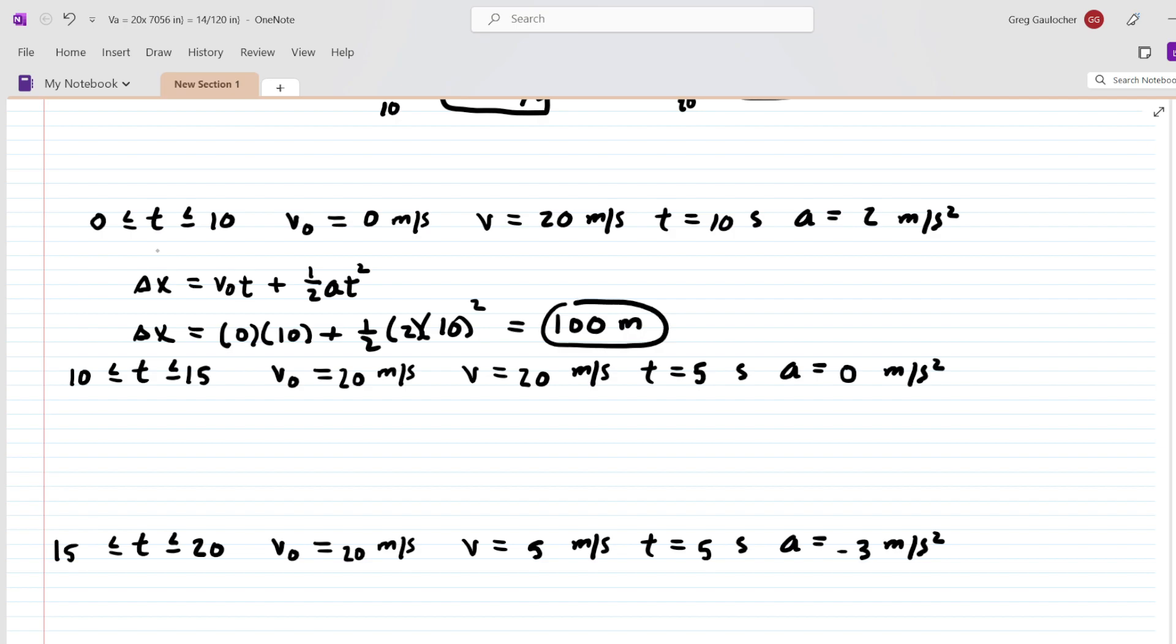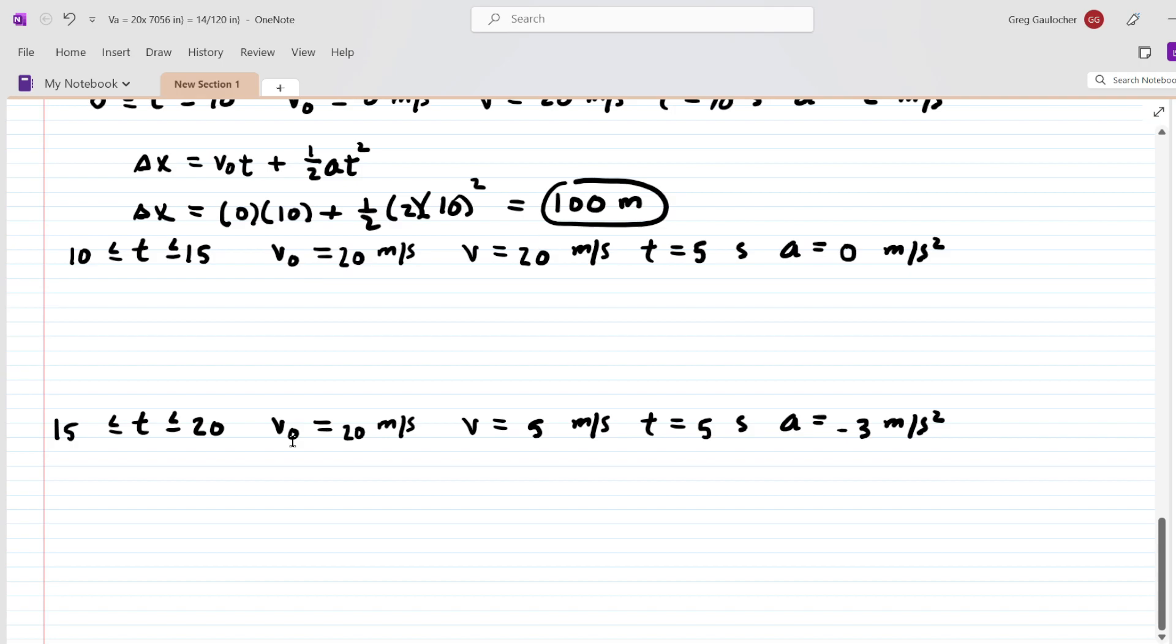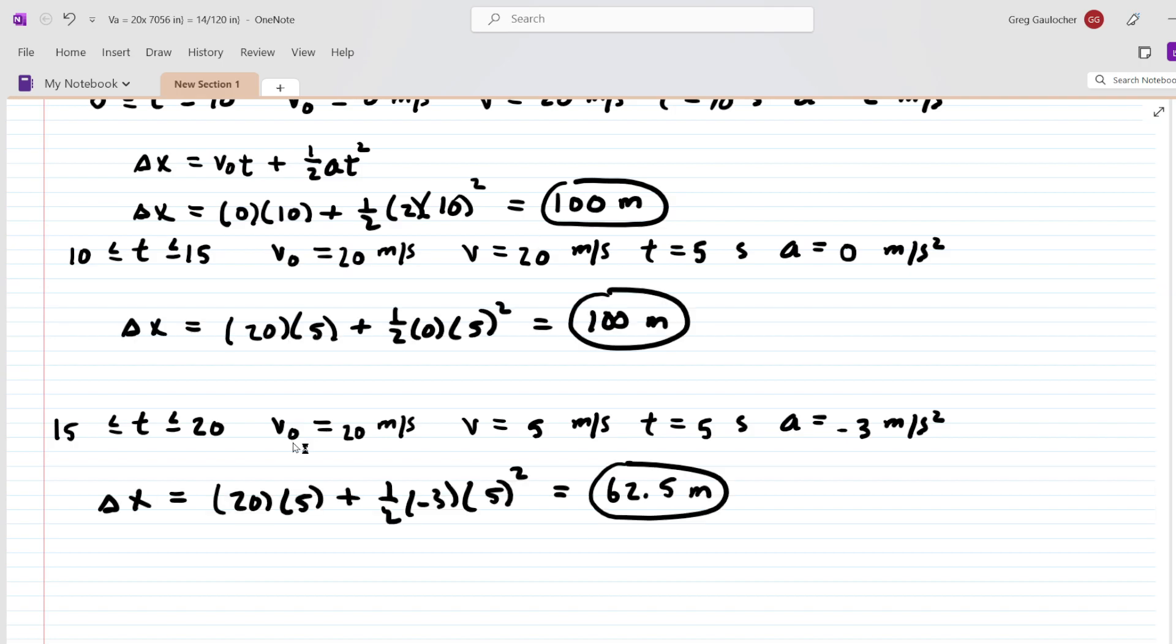But we have to do a similar calculation for the other two time intervals. Pause the video and see if you get the following answers. There are the three distances traveled by the particle, and we want the total distance for the entire 20-second interval. So all we have to do is add these three distances together. When you do that, you're going to get 262.5 meters, which we can round to three significant figures as 263 meters. This is the final answer to the question.